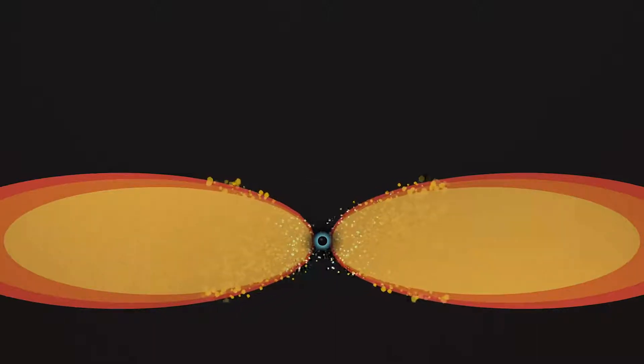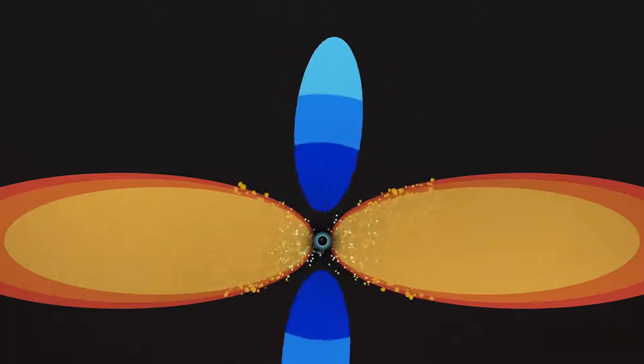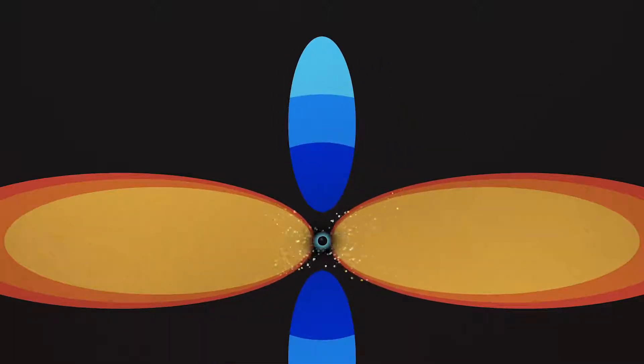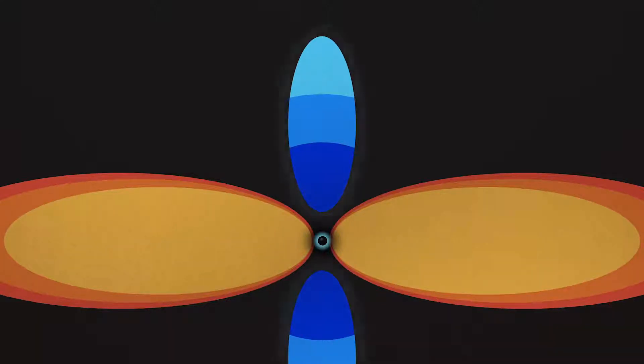Above the black hole is a region of subatomic particles called the corona. The corona is extremely hot, one billion degrees, and shines in even higher energy X-rays.